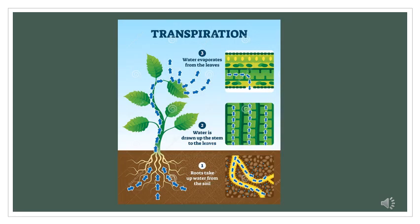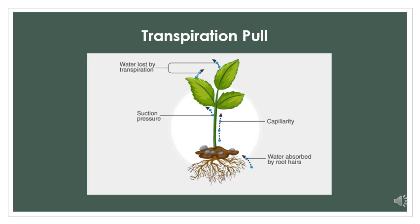Third important force for the ascent of sap is transpirational pull which is caused due to transpiration. Transpiration is the loss of water from the plant in the form of water vapors. Transpiration directly stimulates the absorption of water from the soil and exerts a negative pressure means suction pressure which pulls water upwards in xylem. This is called transpirational pull. The following video will help you in understanding the ascent of sap.